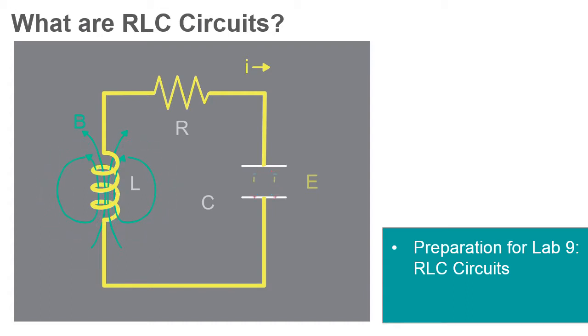An RLC circuit is called a second-order circuit as any voltage or current in the circuit can be described by a second-order differential equation for circuit analysis.